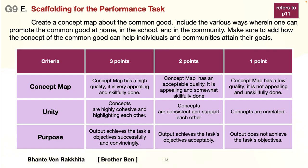The criteria — the rubrics — how it's going to be scored: three points, two points, and one point. For three points, the concept map has high quality — it is very appealing and skillfully done. For two points, the concept map has an acceptable quality and it is appealing and somewhat skillfully done. For unity: three points — the concepts are highly cohesive and highlighting each other. Two points — the concepts are consistent and support each other but not so well. One point — the concepts are unrelated; they're not linked up and don't seem to show much about each other.